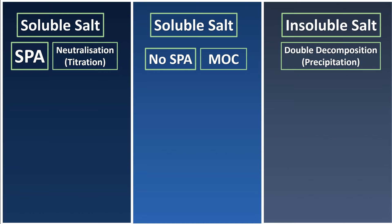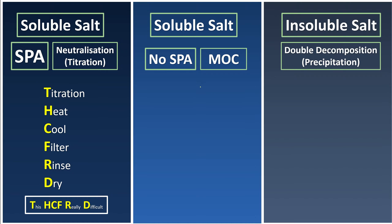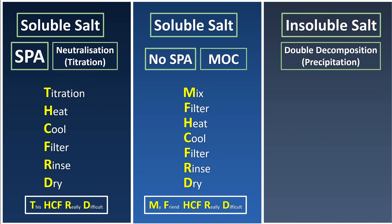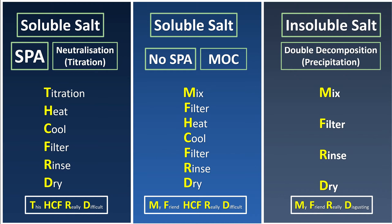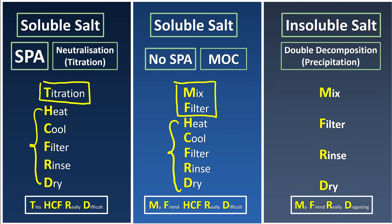We use mnemonics to remember all procedures. For soluble salt that contains SPAR: 'This HCF is very difficult.' For salt that does not contain SPAR, like 'my only children does not go to SPAR': 'my friend, HCF is very difficult.' For insoluble salt using double decomposition — since it's decomposed twice, it's really disgusting — so: 'my friend, really disgusting,' giving M-F-R-D. The back part (HCF) is the same for both soluble methods; the difference is titration for SPAR, and metal/oxide/carbonate for non-SPAR.